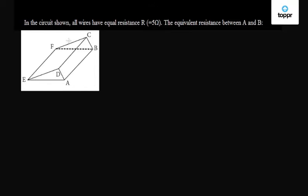Let's take a question on equivalent resistance. We are given a circuit here. All the branches of these wires have equal resistance R, that is 5 ohm. Then what is the equivalent resistance between points A and B?